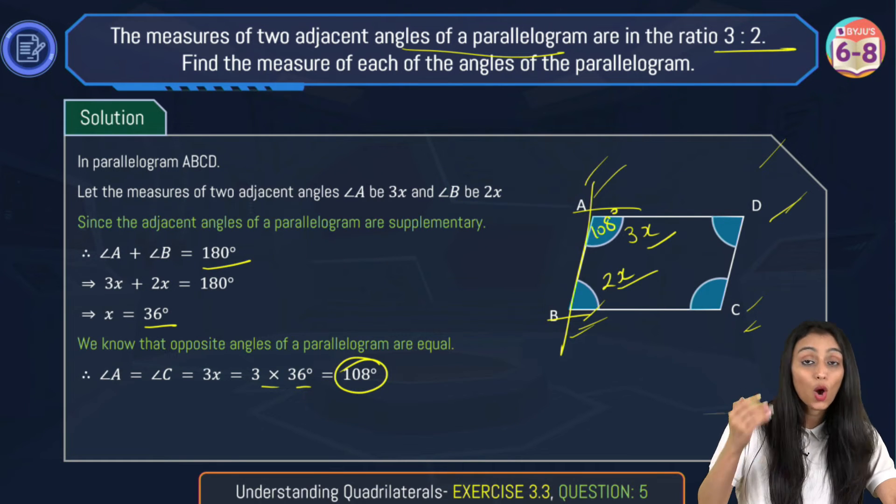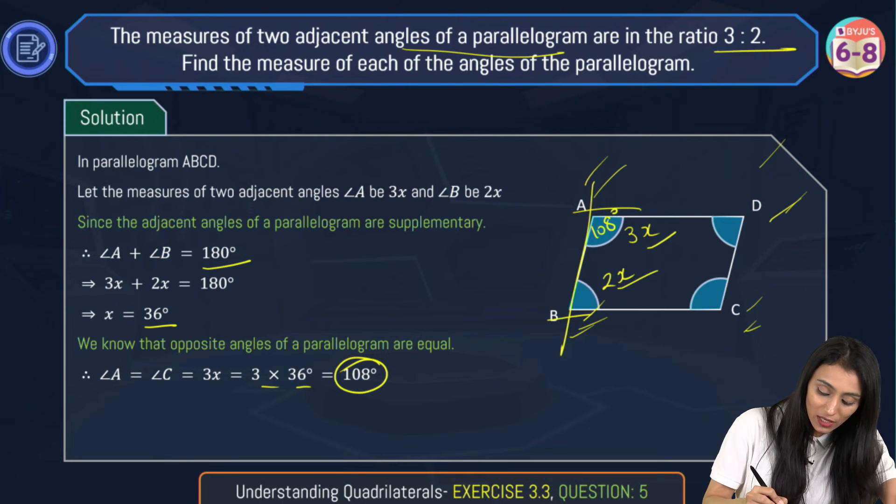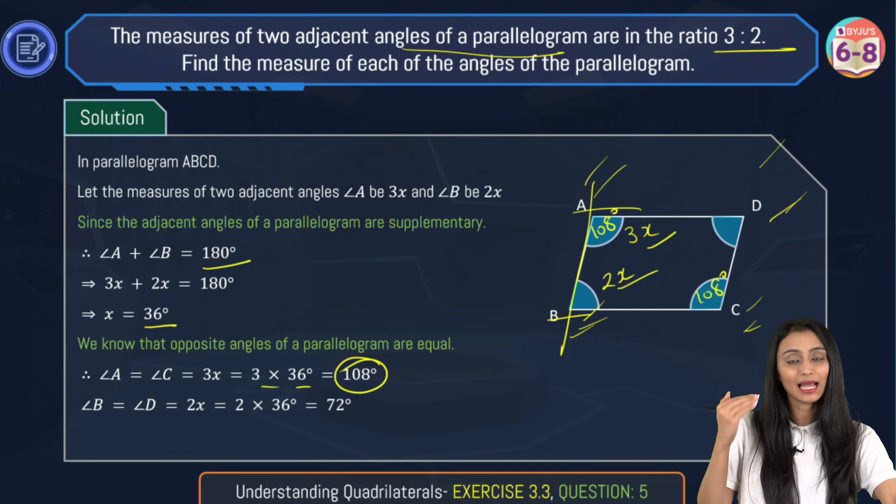So measure of angle A is 108 degrees and opposite angles of a parallelogram are equal. So this is also going to be equals to 108 degrees. Angle A and angle C are equal.